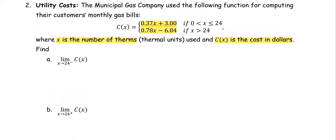In part A, x approaches 24 from the left, which means x is slightly less than 24.